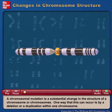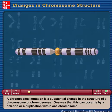A chromosomal mutation is a substantial change in the structure of a chromosome or chromosomes. One way that this can occur is by a deletion or a duplication within one chromosome.